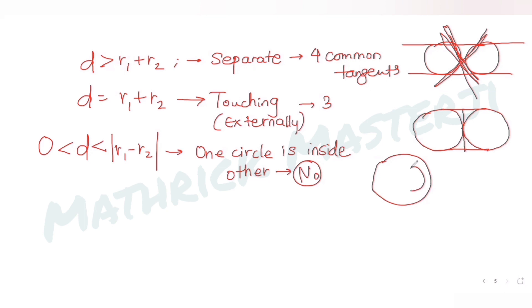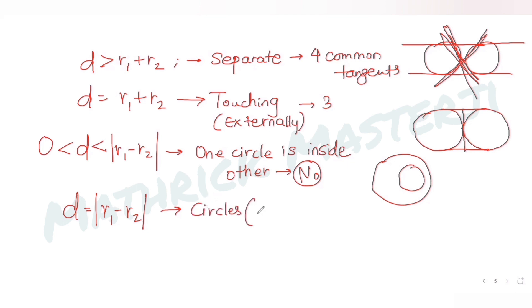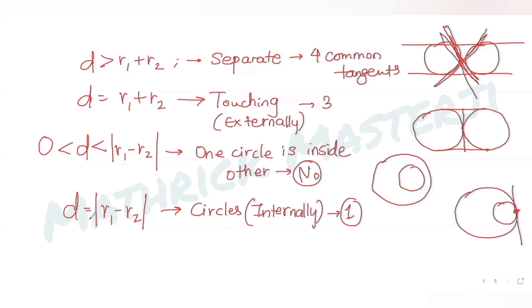If the distance equals |r1 - r2|, the circles touch internally and there is 1 common tangent. If the distance is less than |r1 - r2|, one circle is entirely inside the other and there are no common tangents. Those are all four conditions.